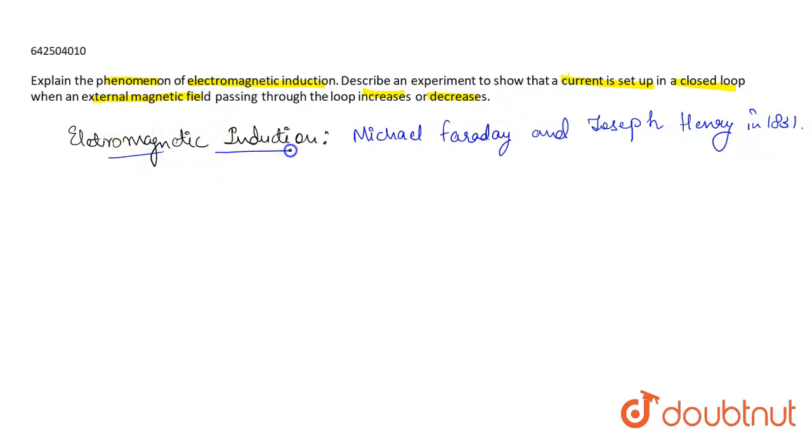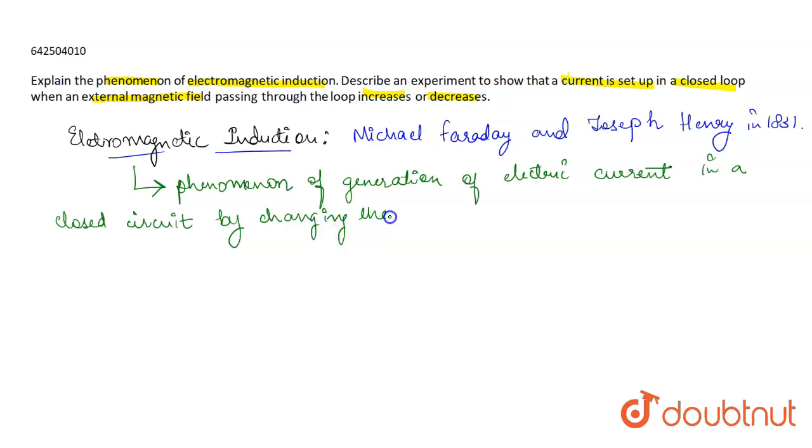What is electromagnetic induction? It is a phenomena of generation of electric current in a closed circuit by changing the magnetic field around it.